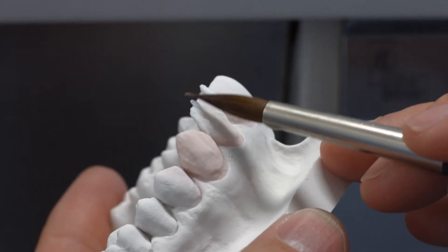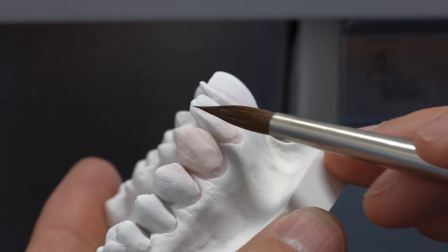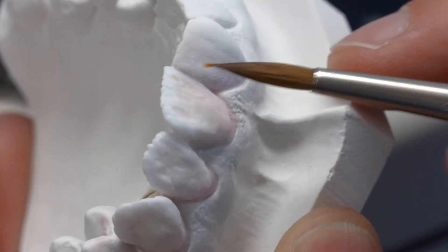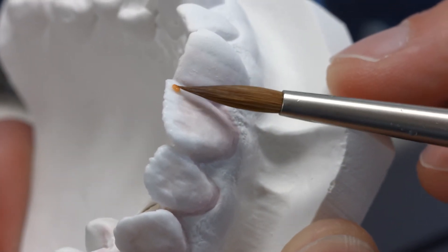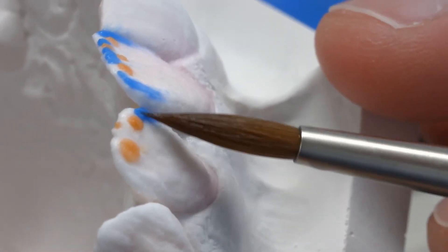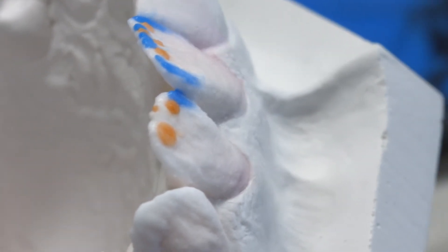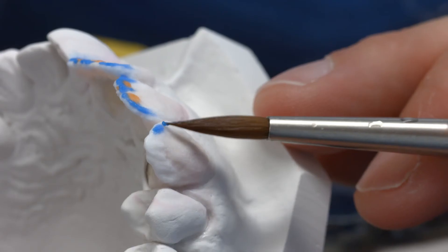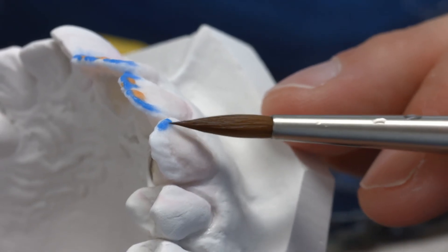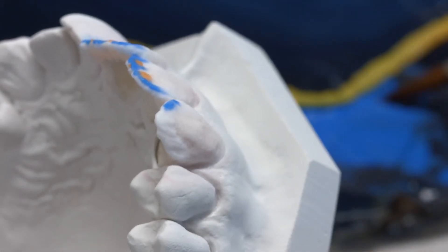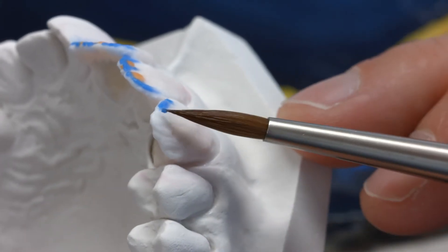Next, individually build up the incisal area. In the present case, the different layering materials have been stained with pigments that fire without leaving any residue to enhance the visualization of the process. This approach is particularly recommended in cases where many different layers and layering materials are used. First of all, use incisal or opal effect materials to create the incisal area.